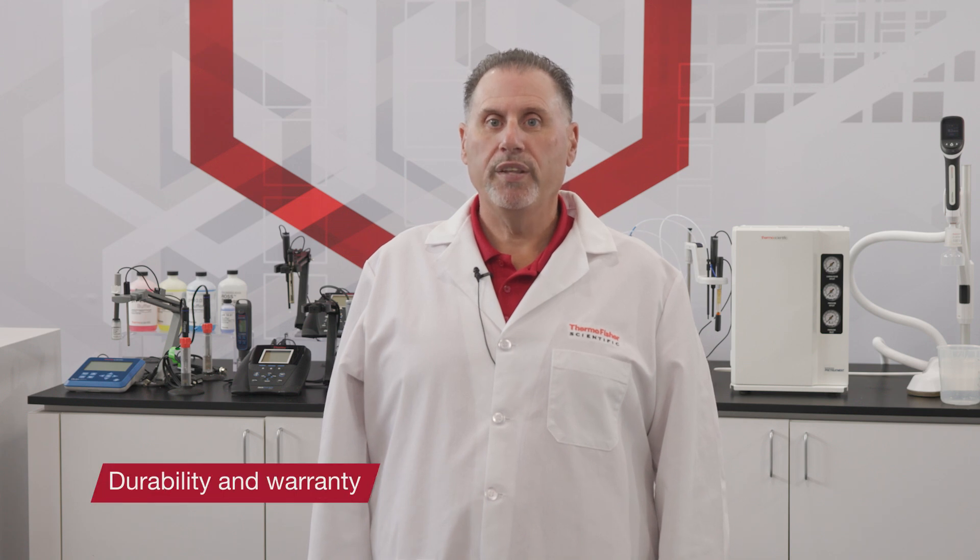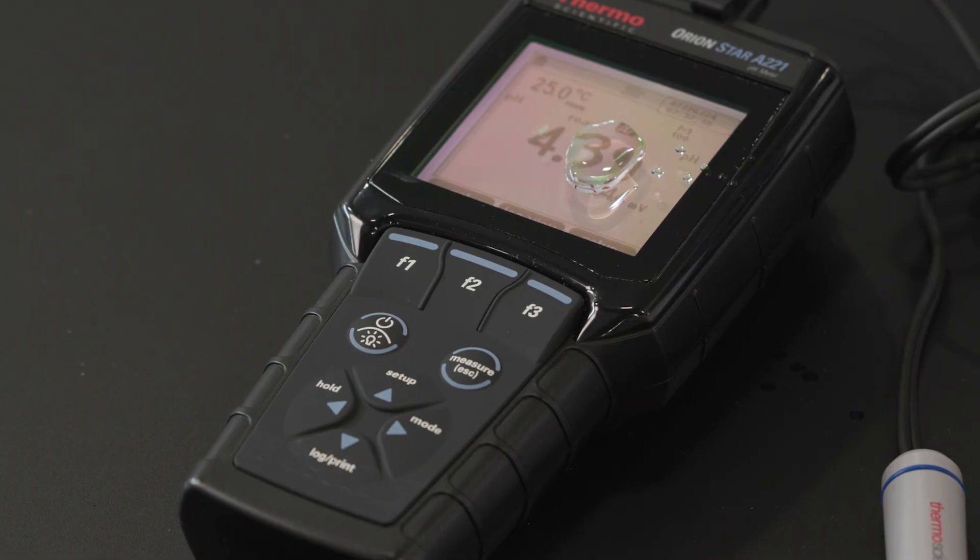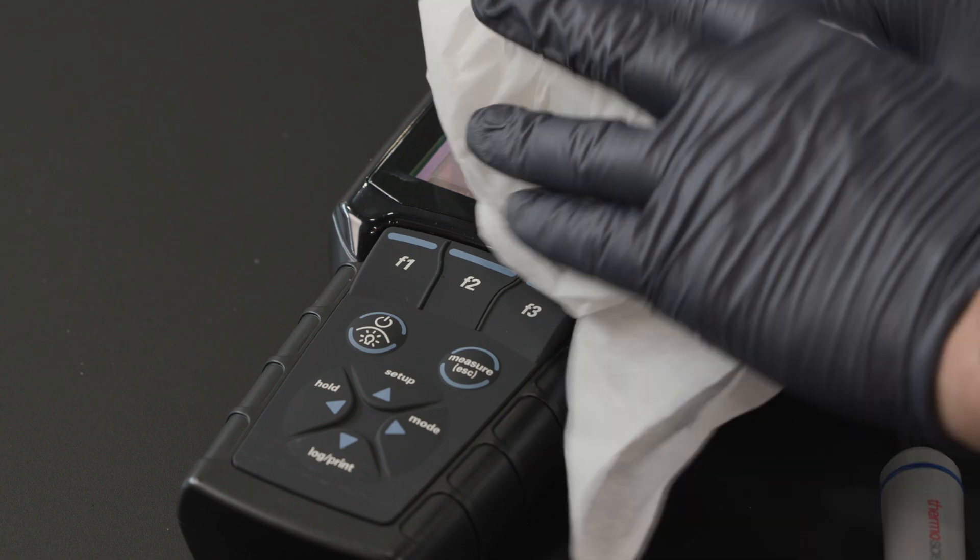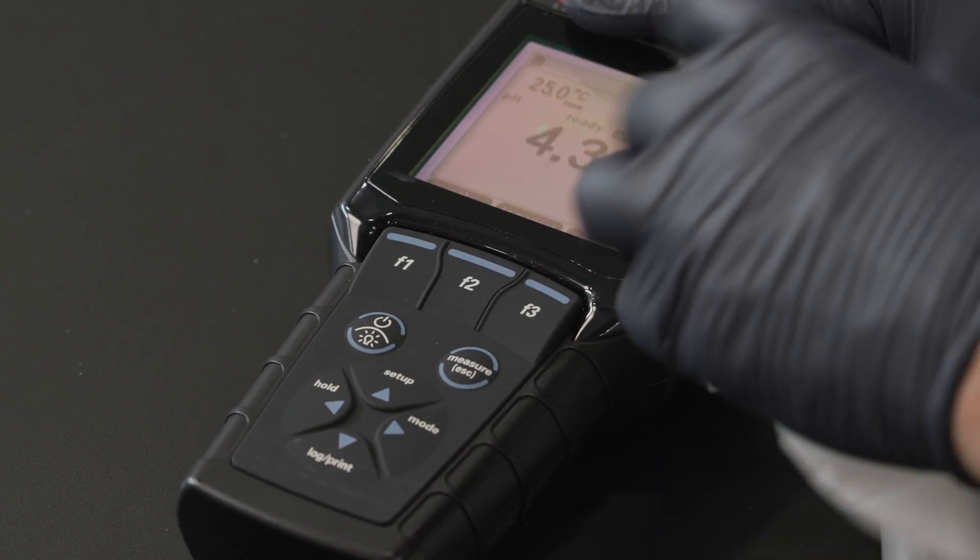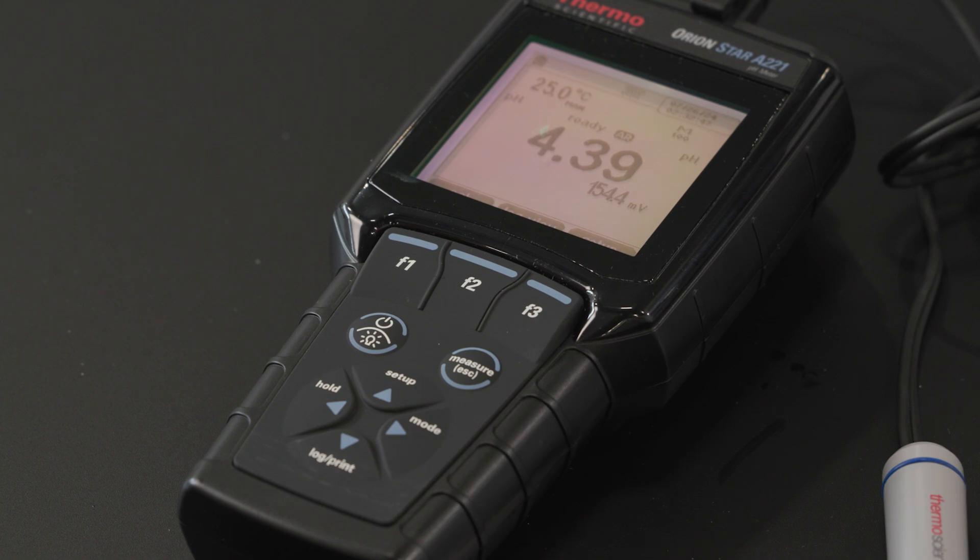Ensuring that you purchase a meter that can withstand tough testing environments is important too. Verify that the meter has an IP rating. IP67 rated products protect against splashes, dust intrusion, and limited immersion. Don't forget to evaluate the manufacturer's warranty too. Look for a minimum of a 3-year warranty to help safeguard against any manufacturer's defects.